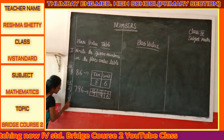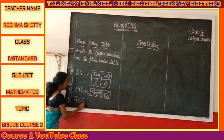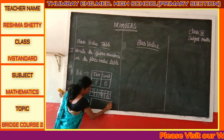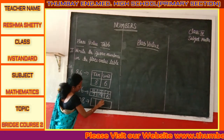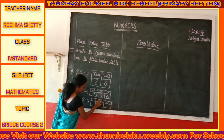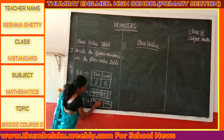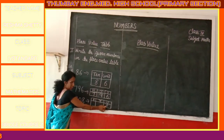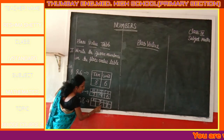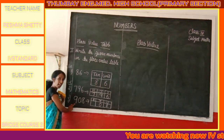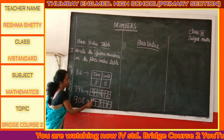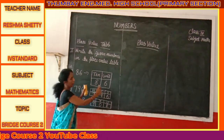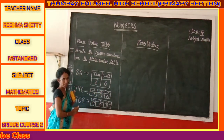Now let's see one more example. Here it is: 908. We have a very easy number. Let's draw the place value table with unit place, tens place, and hundreds place. 8 is in the unit place. Here we have 0 tens, so 0 is in the tens place. Then we have 900, so we write 9 in the hundreds place.